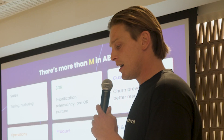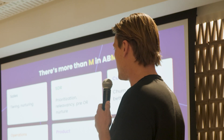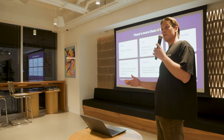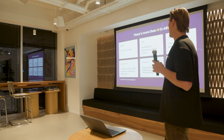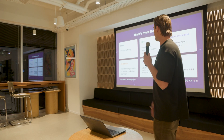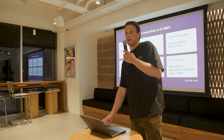Customer success can use ABM for churn prevention, which is an interesting use case. Operations can benefit from unified scoring models for target accounts across sales and marketing, enabling better revenue management and measurement. For product, ABM supports feature launch prioritization and general awareness about new features. For PR and communications, you can deliver targeted messaging directly to specific accounts through targeted B2B advertising.